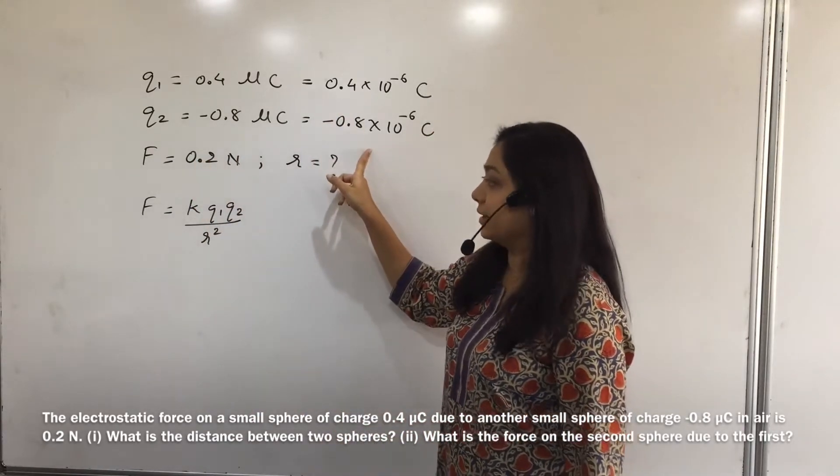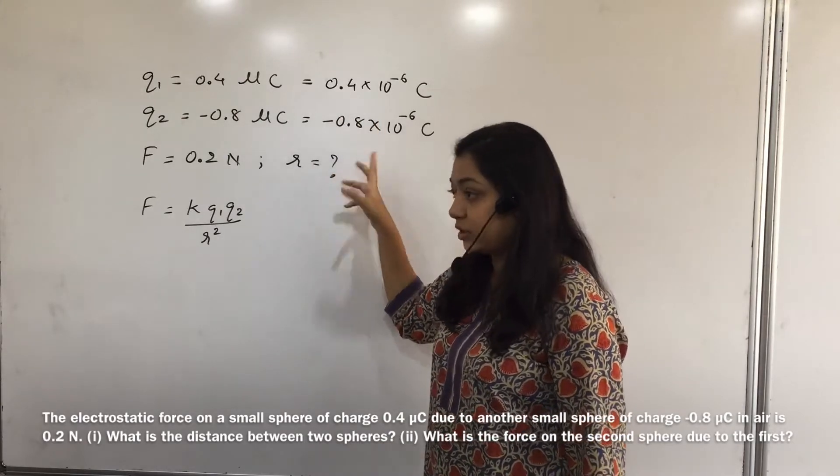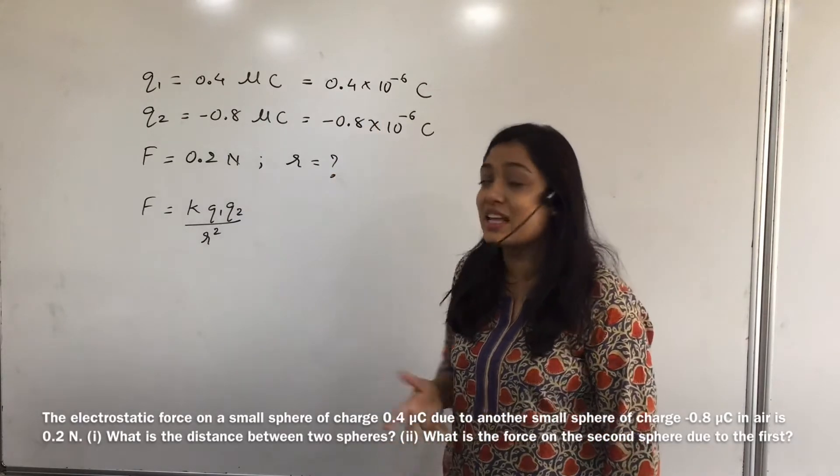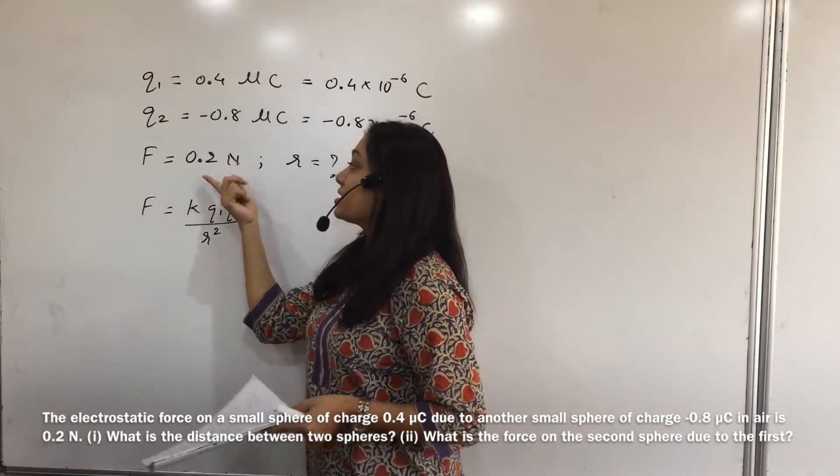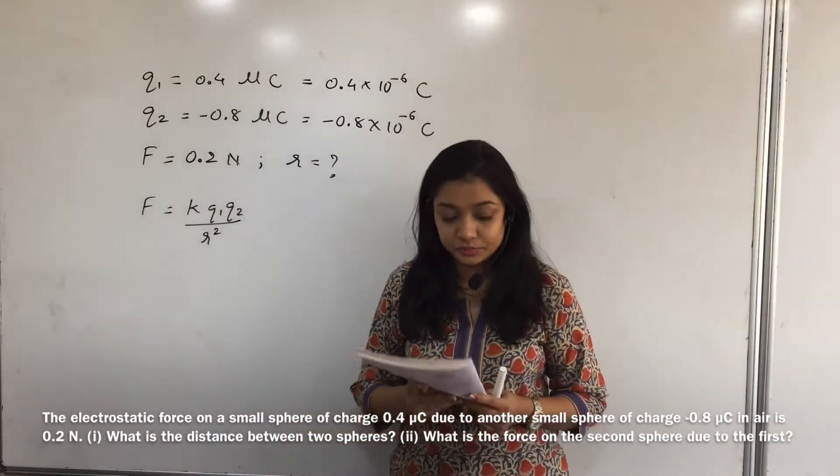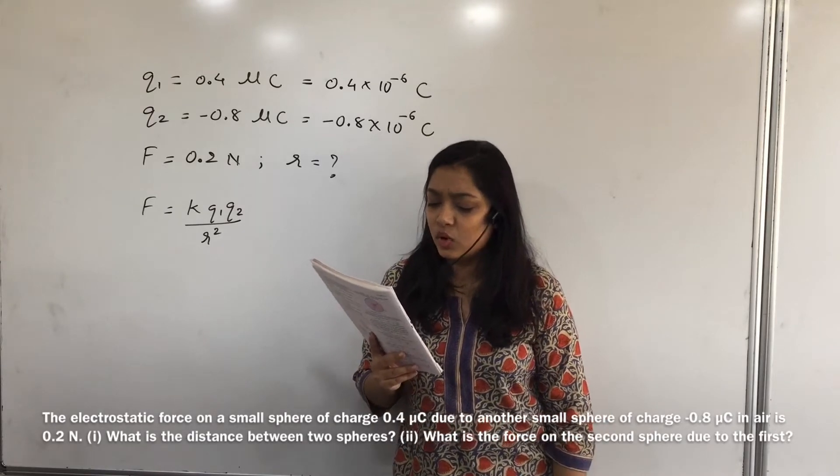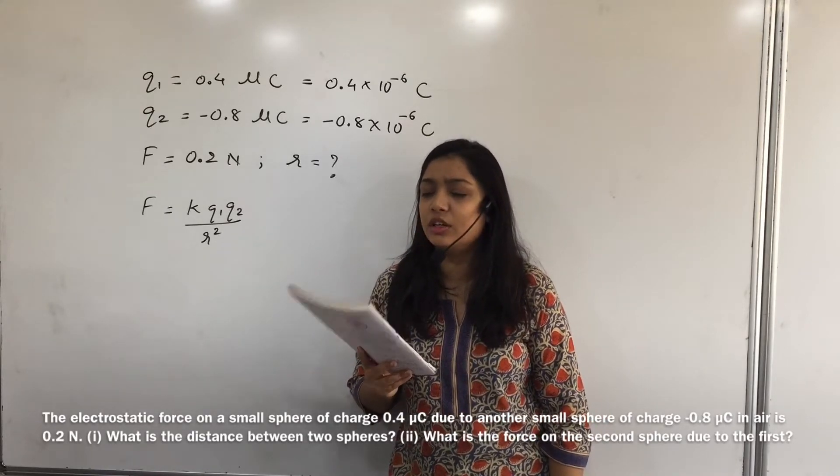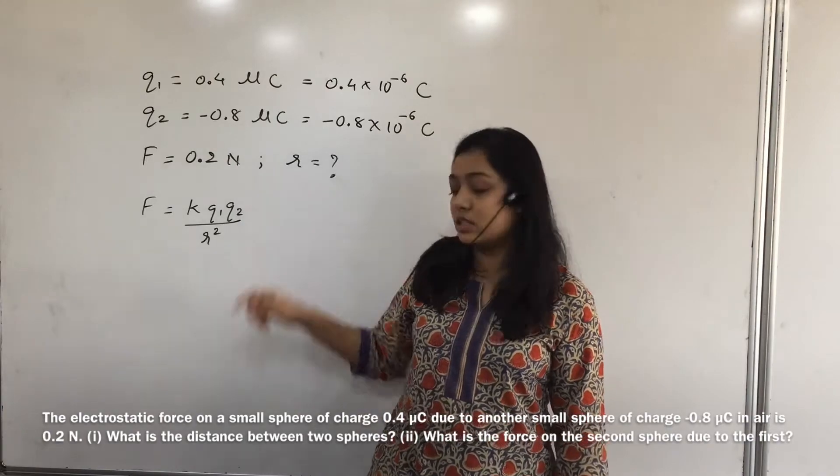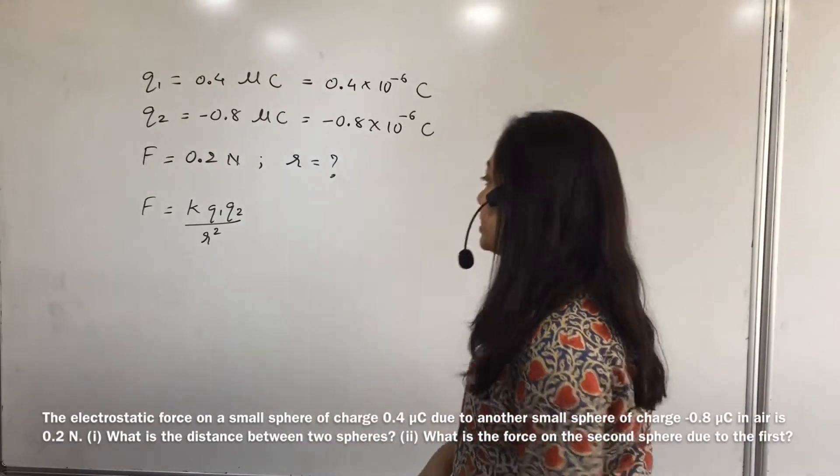So these two charges are given. The electrostatic force is given to us as 0.2 Newton. There are two things that we are supposed to find out. The first is, what is the distance between two spheres? So this distance we are supposed to find out. Let us find out that first.